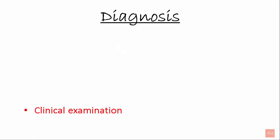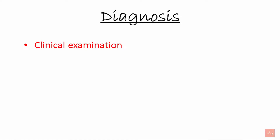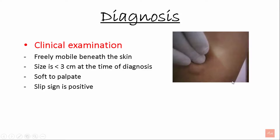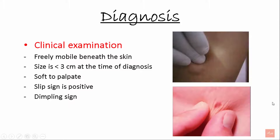Diagnosis of lipoma can be done with clinical examination. It is freely mobile beneath the skin. The size is usually less than 3 cm at the time of diagnosis and can go up to 5–6 cm over a period of years. It is soft to palpate. The slip sign is positive — when you press on a lipoma, it freely slips under the skin. The dimpling sign: when you hold the lipoma with two fingers and press it, it may create a dimple.